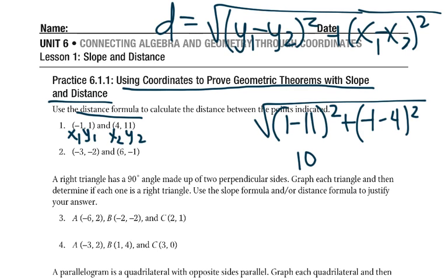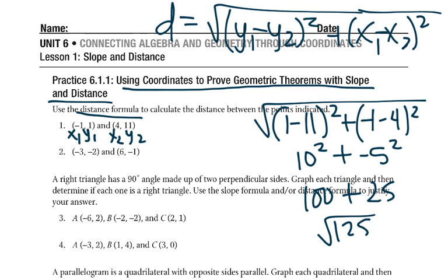1 minus 11 gives us negative 10 squared, which is 100. Negative 1 minus 4 gives us negative 5 squared, which is positive 25. So we get the square root of 125, which we can calculate with a calculator — the square root of 125 gives us a distance of about 11.18.